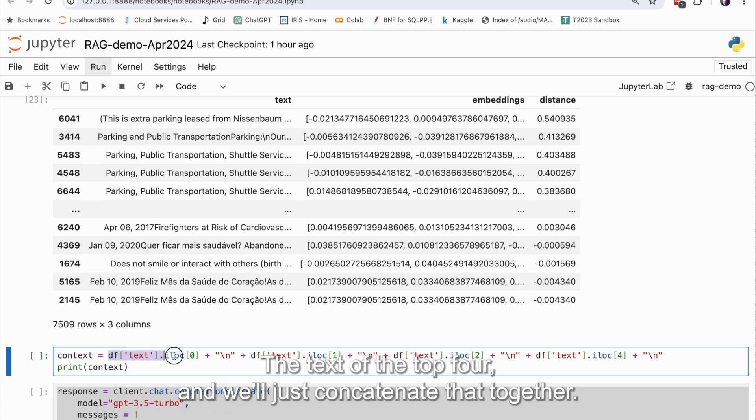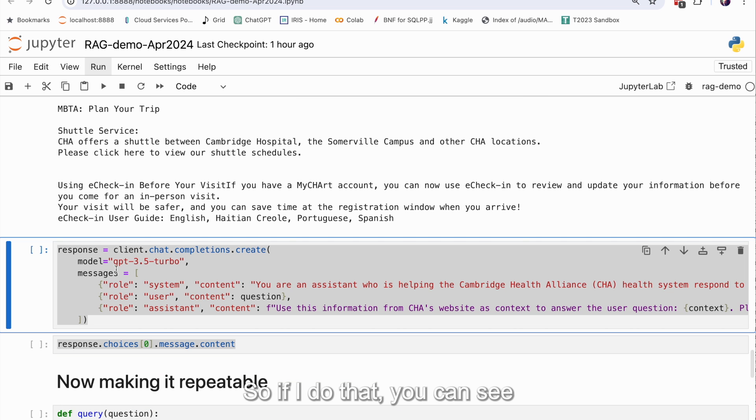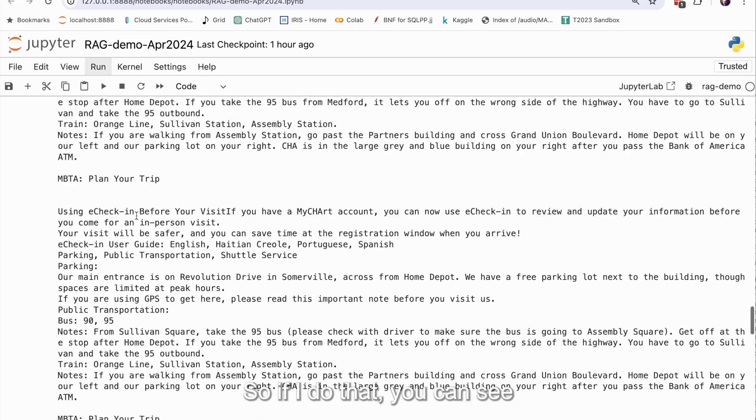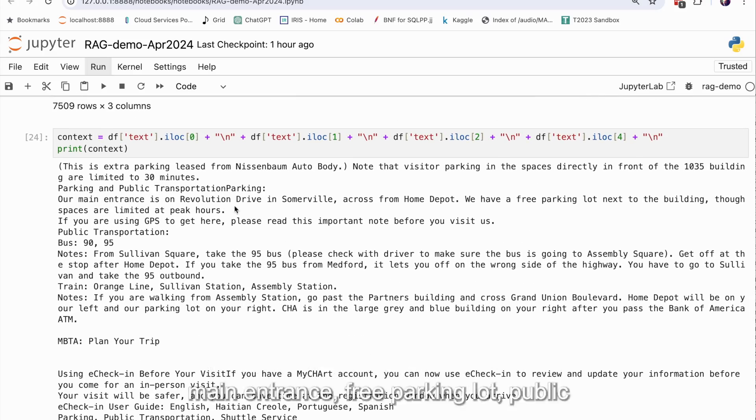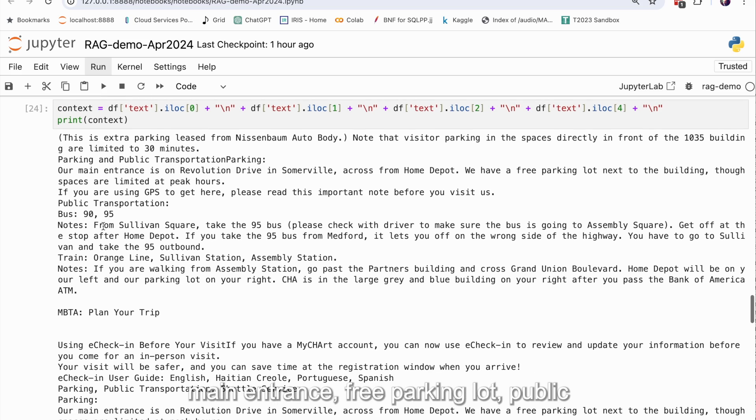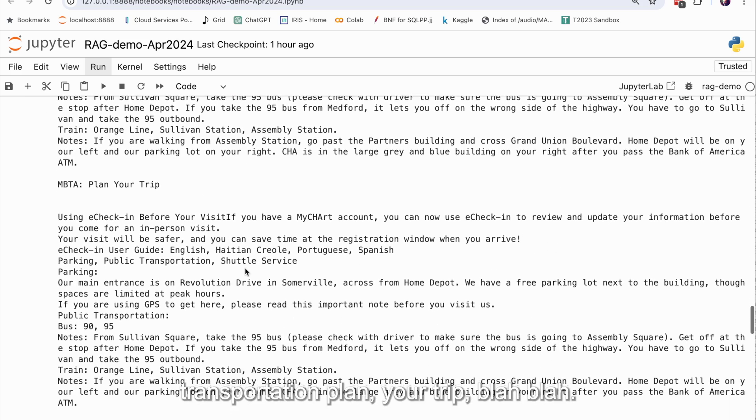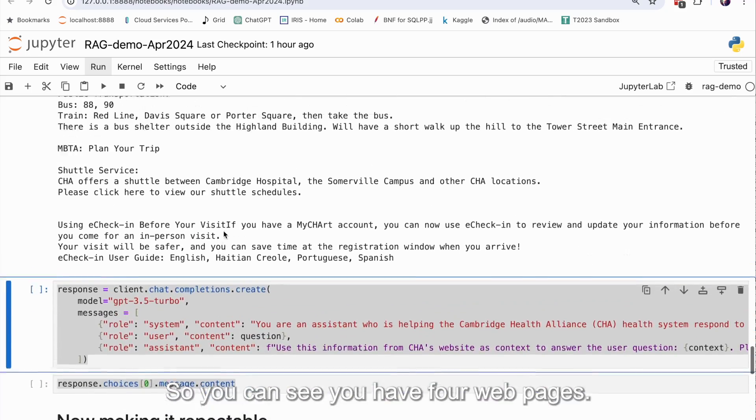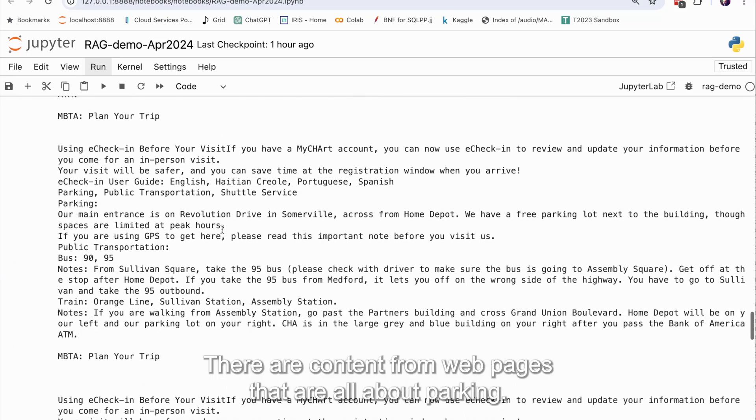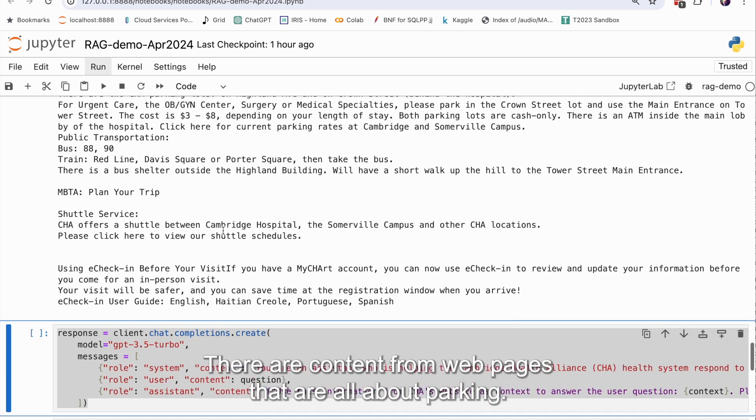So what we want to do is take the top four, which I'm doing here, the text of the top four, and we'll just concatenate that together. So if I do that, you can see that the top four is a bunch of things about parking. Main entrance, free parking lot, public transportation, plan your trip. So you can see you have four web pages there or content from web pages that are all about parking.